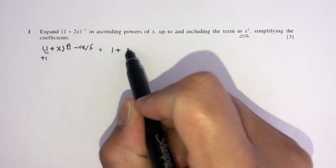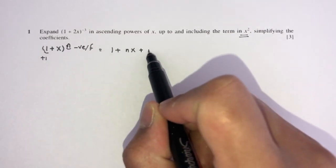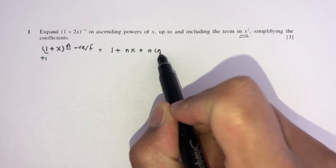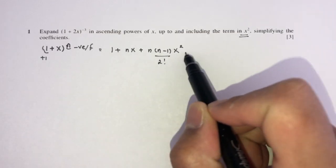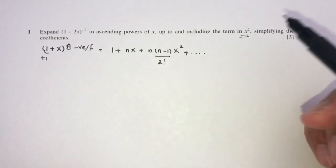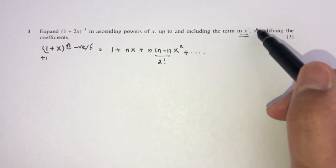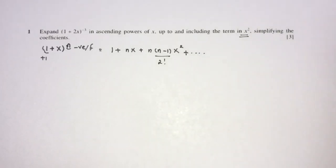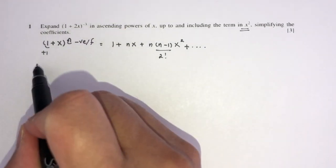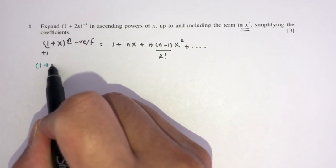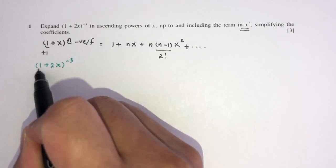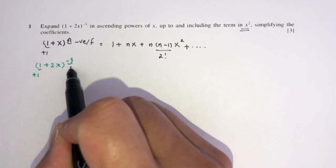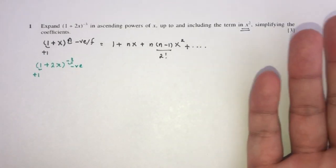This formula is only valid if there is a plus 1 and n is negative or a fraction. The expansion is: 1 + nx + n(n−1)x²/2! plus further terms, but we will stop at x squared. Here we have (1 + 2x)^(−3), where the +1 condition and negative power are satisfied, so we can use the formula.